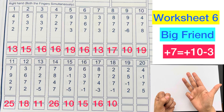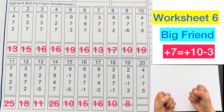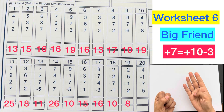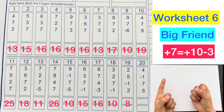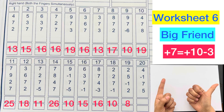Answer is 8. 4 minus 1 plus 7 plus 10 minus 3 plus 5, answer is 15.